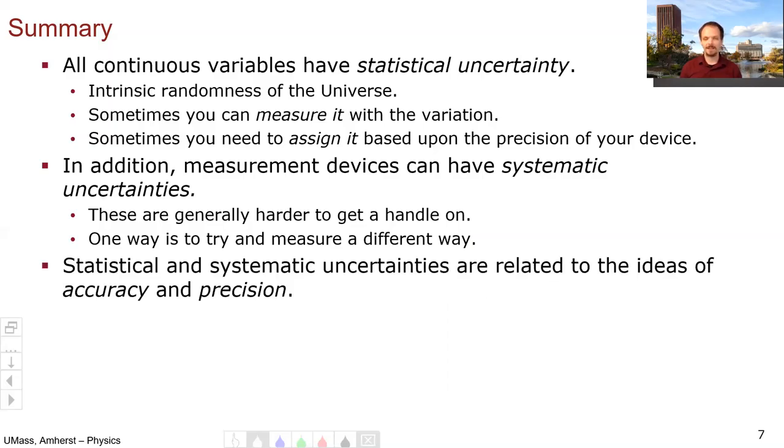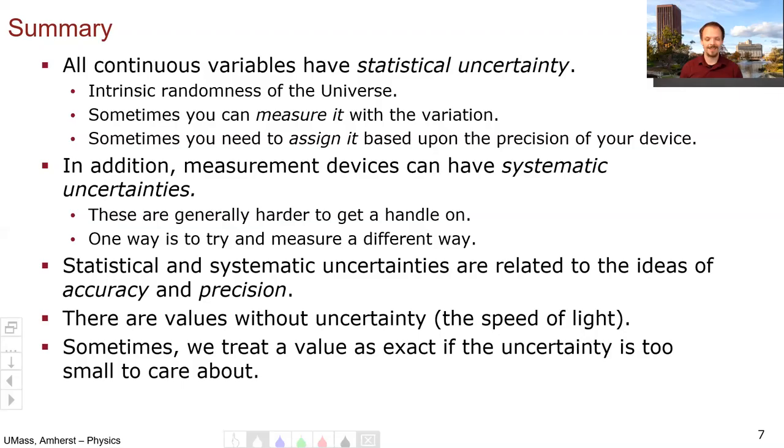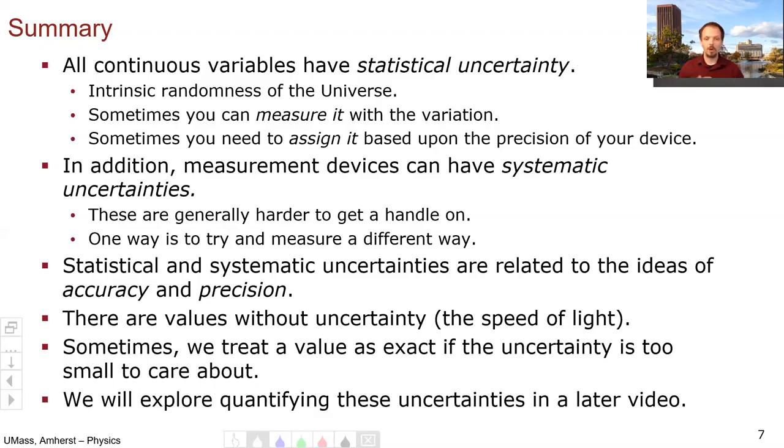These ideas of statistical and systematic uncertainty are related to the ideas of accuracy and precision that you've seen in other courses. And it's worth pointing out that there are values without uncertainty, such as the speed of light. And then sometimes we treat values as exact if the uncertainty is too small for us to care about, or non-idealities are not important, or there are bigger uncertainties that we have to deal with. We might treat some numbers as exact. That's fine. And we'll explore how to quantify all of these things in a later video.